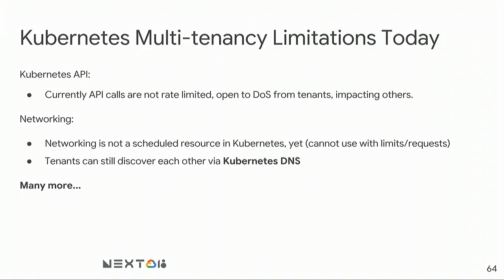Kubernetes multi-tenancy also has some current limitations. First, API calls are not rate-limited, which can be an attack surface. Second, networking is not a schedulable resource yet, so we need to figure out how to properly slice networking resources and attach them to namespaces. Third, tenants can still discover each other via Kubernetes DNS. These are high-level control plane robustness and isolation gaps that need to be addressed for full Kubernetes multi-tenancy.